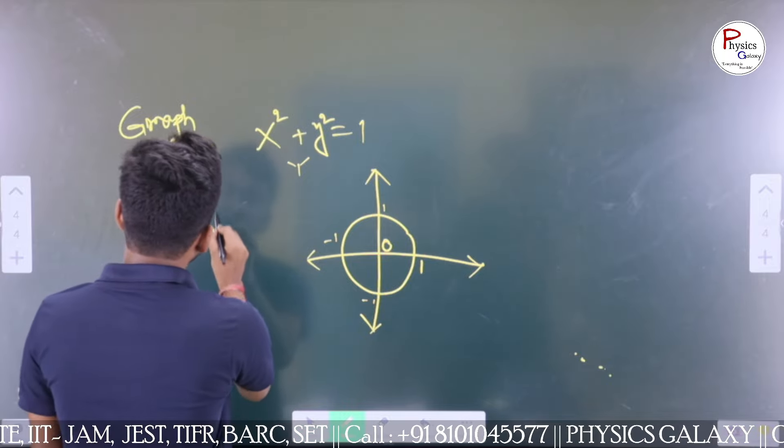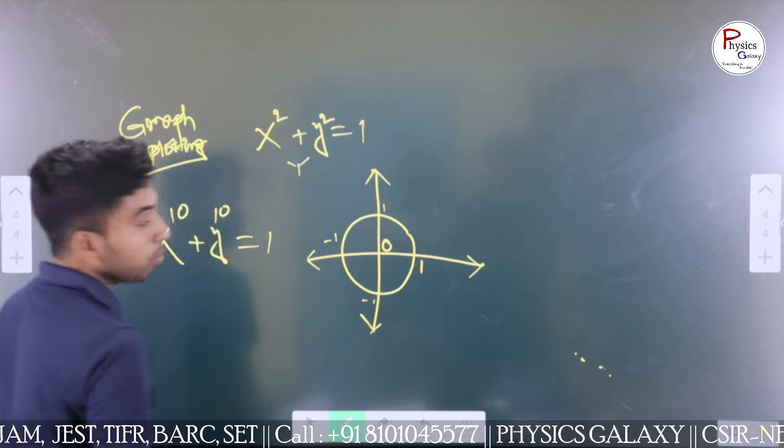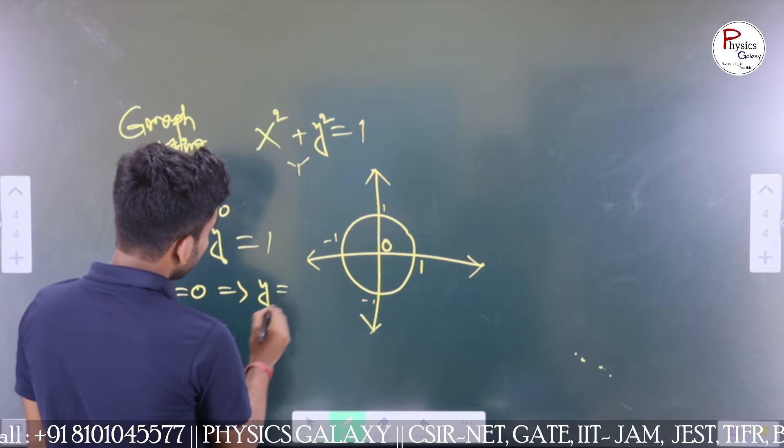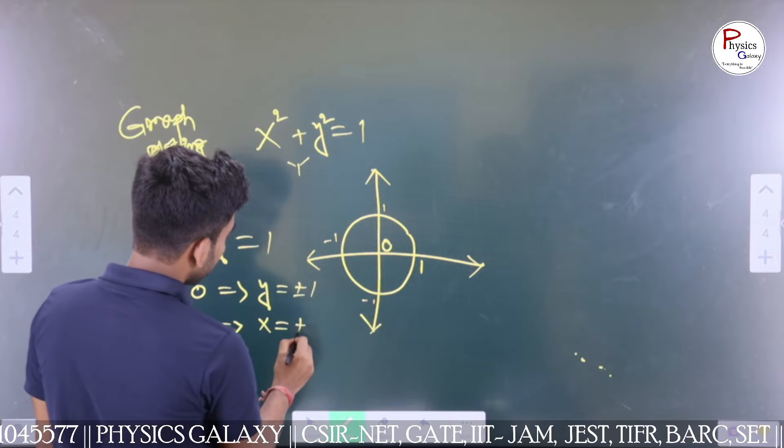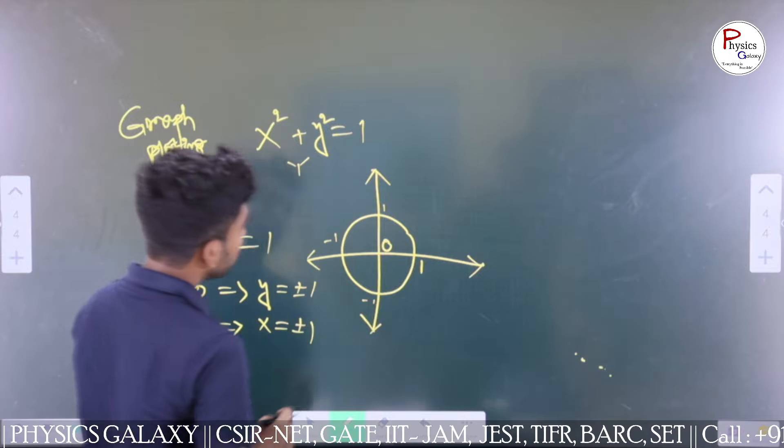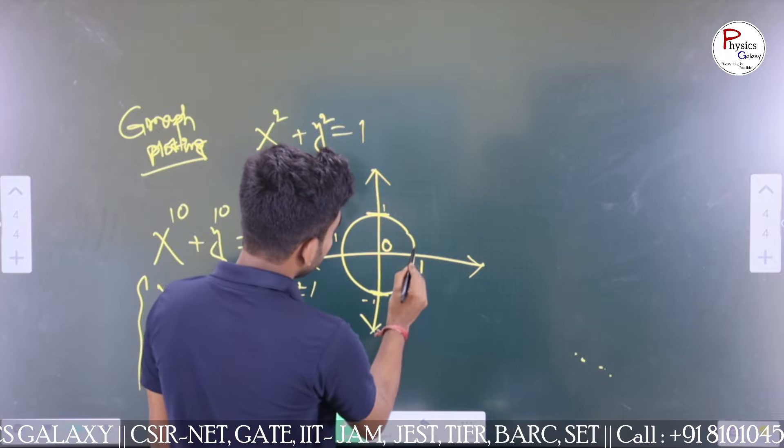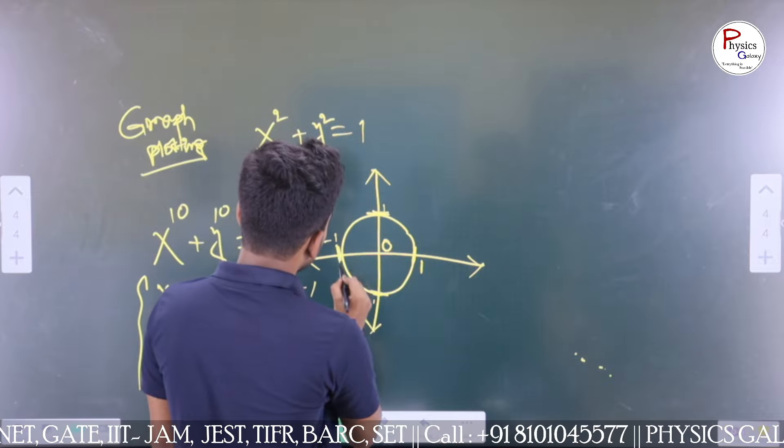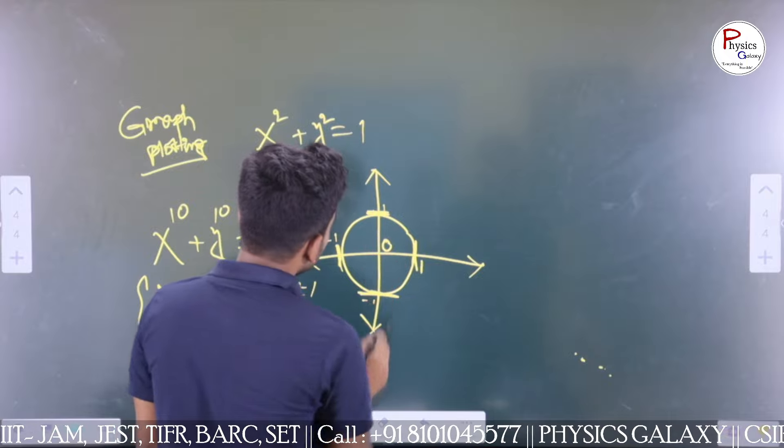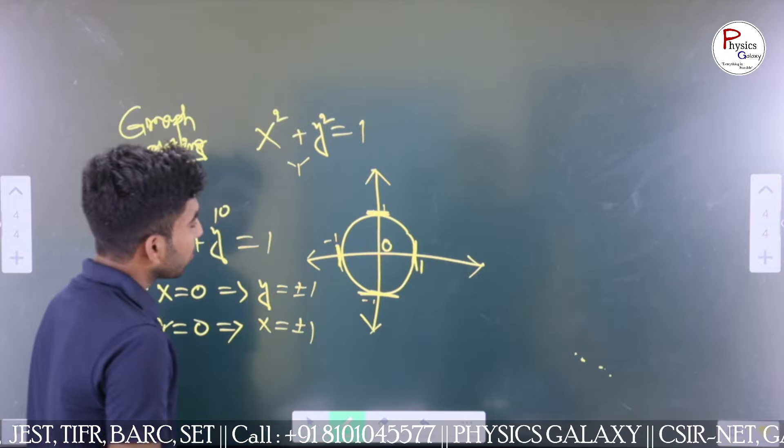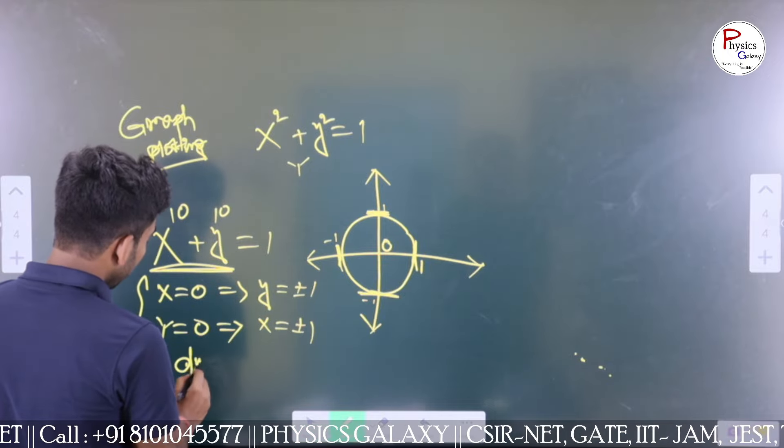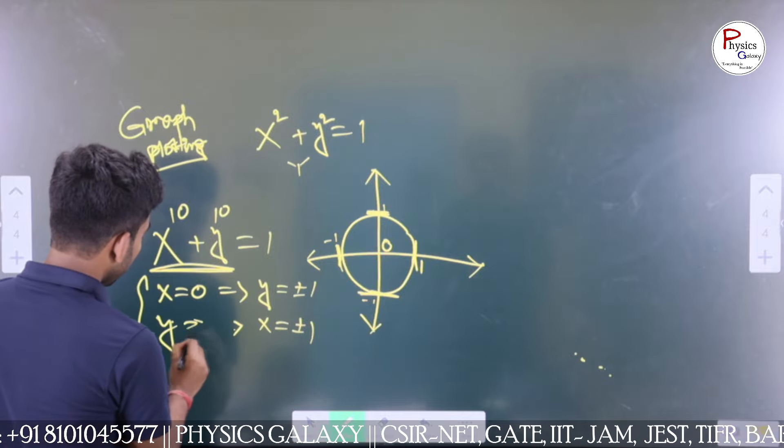They said okay, all right. Then if instead of x² + y², we change the equation to x¹⁰ + y¹⁰ = 1, then what will be its graph? From the rules of graph plotting, we take x = 0 and y = 0 points. Then we get y = ±1 and x = ±1. From this result, we say that these four points are the same for both cases.